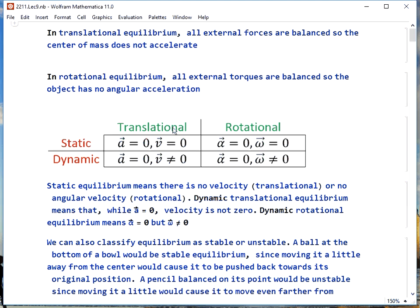In addition to looking at translational and rotational equilibrium, we can also look at static and dynamic. In static translational equilibrium, not only is the acceleration zero, but the velocity is also zero. Dynamic translational equilibrium means acceleration is zero but velocity is not equal to zero.